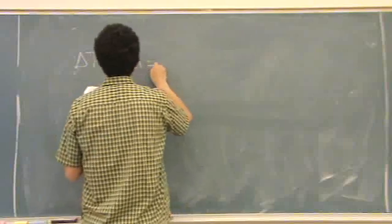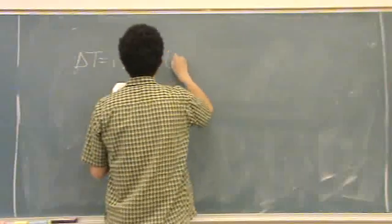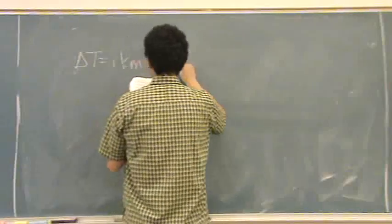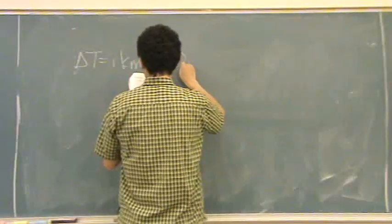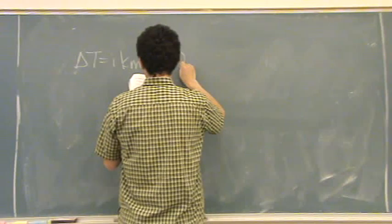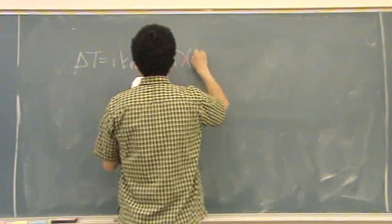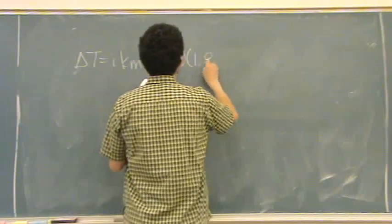These are all organics, so i is 1. K is 1.86.